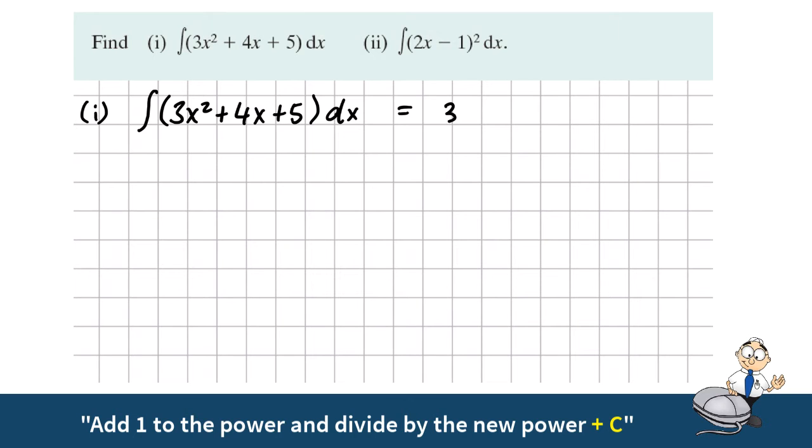So take the 3x squared, increase the power by 1 so it becomes 3x cubed and divide by the new power, divide by 3. We do the same for each of them, increase the power by 1, divide by the new power.